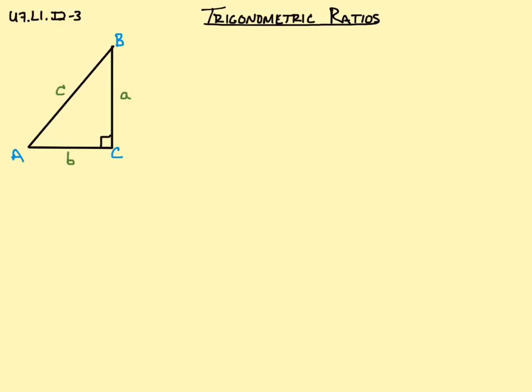So what were our trig ratios? We started with sine, and let's look at sine A. So we're going to be looking at this angle down here. So sine A, we found that the relationship was the opposite side over hypotenuse. And in this case, the side opposite of angle A is side a, and the hypotenuse is c. So we have a over c.